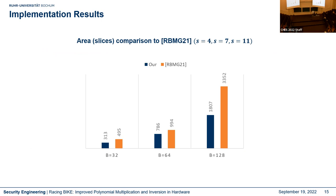We compared our new approach based on the extended GCD to the approach based on Fermat's little theorem, instantiating our new core to take roughly the same number of clock cycles. We use fewer slices than the Fermat's little theorem design, so our approach is more efficient.